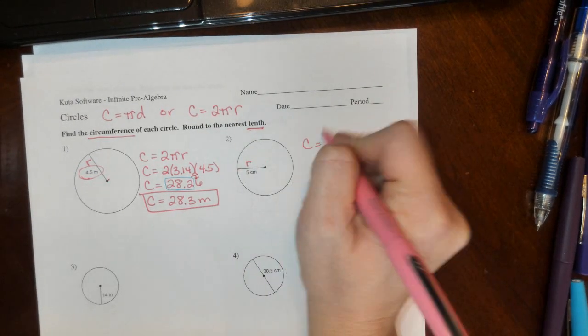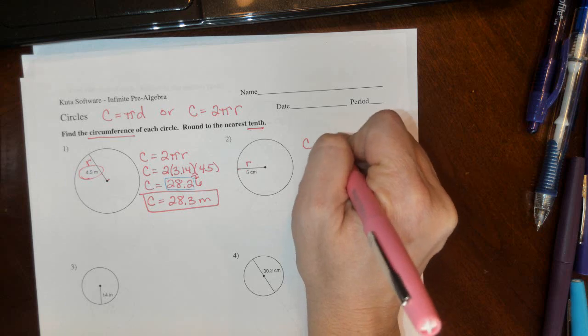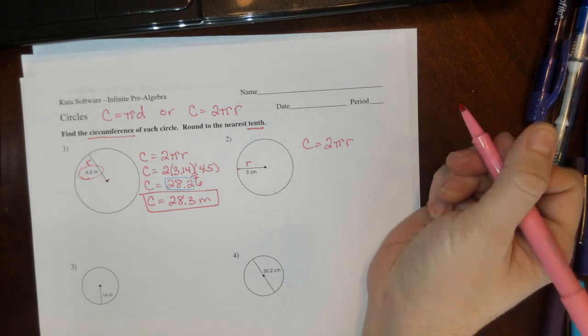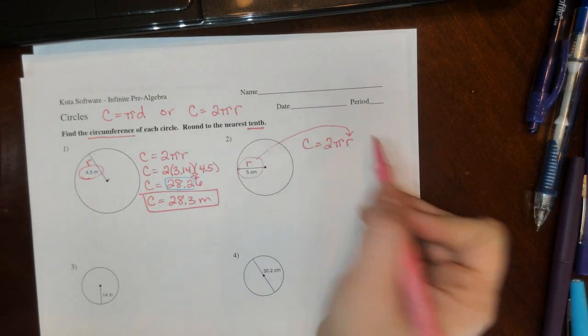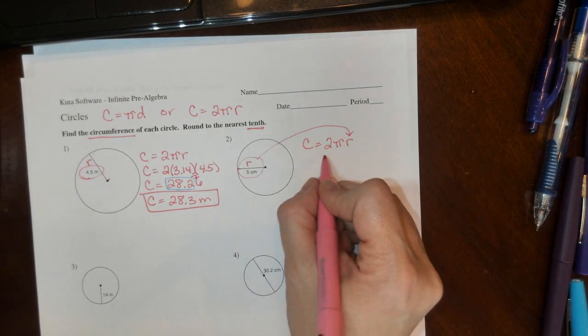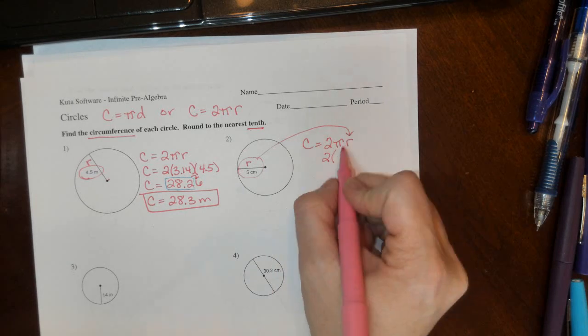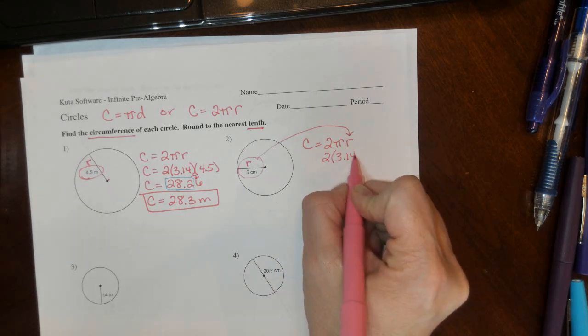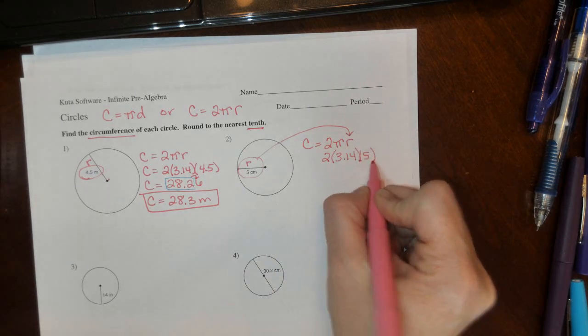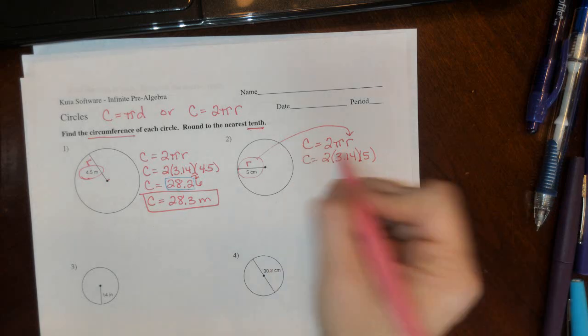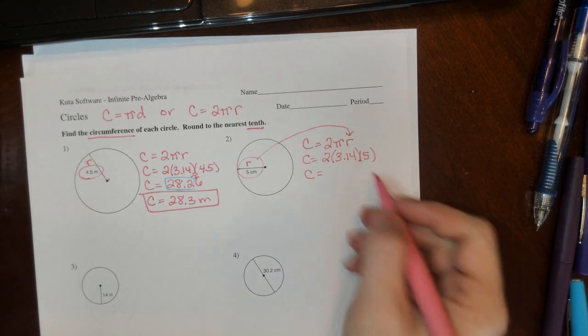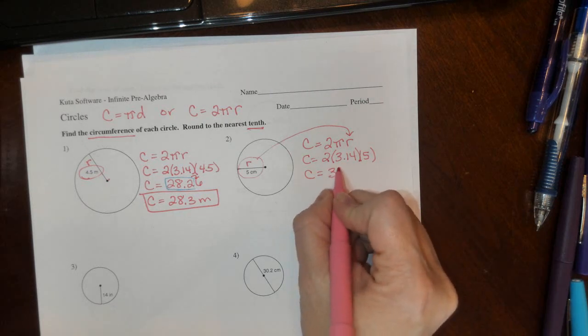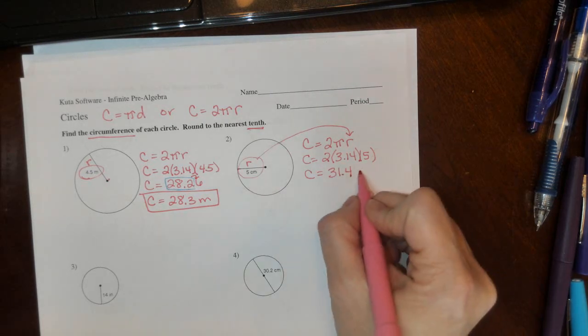Substitute our radius in for r: 2 times 3.14 times 5. That equals 31.4 centimeters.